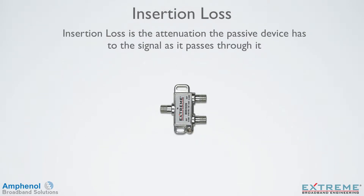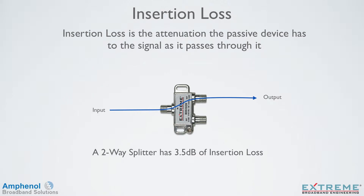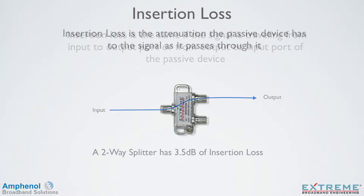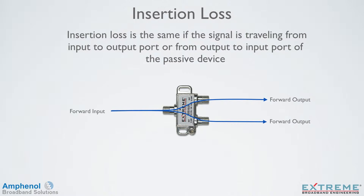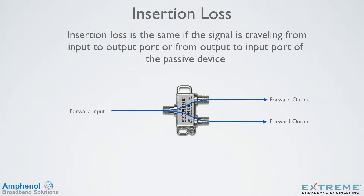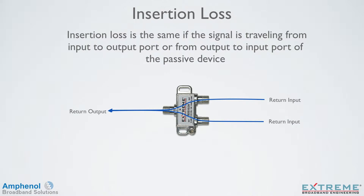Insertion loss is the attenuation the passive device has to the signal as it passes through it. Here we're showing a signal flowing from the input to the output of the two-way splitter. A two-way splitter has 3.5 dB of insertion loss. Insertion loss is the same if the signal is traveling from the input to the output ports, or from the output ports to the input port of the passive device. Here we're showing a two-way splitter with the forward signal flowing from the input to the output ports, and the return signal feeding from the output ports to the input. In both directions, the insertion loss is the same.